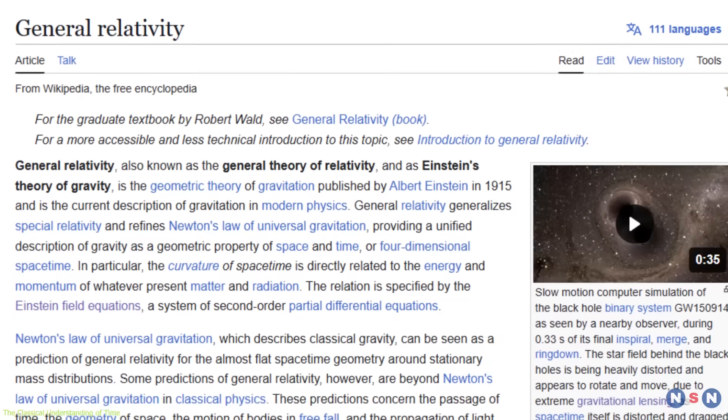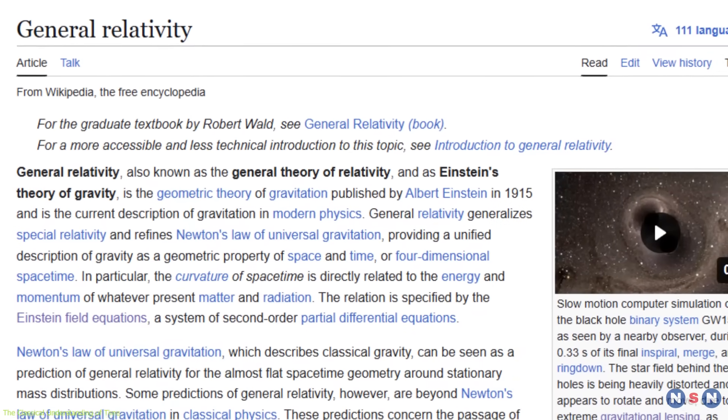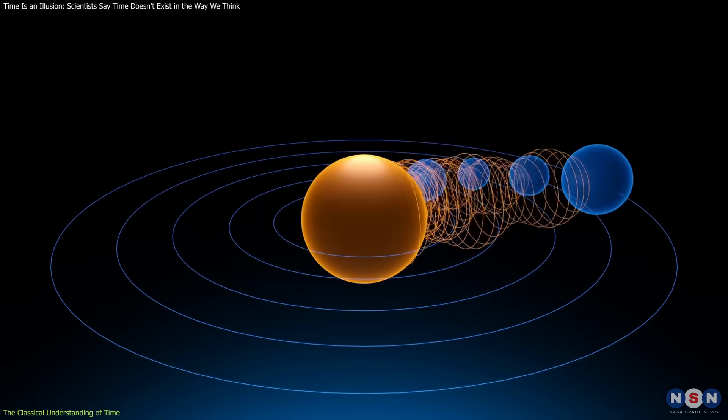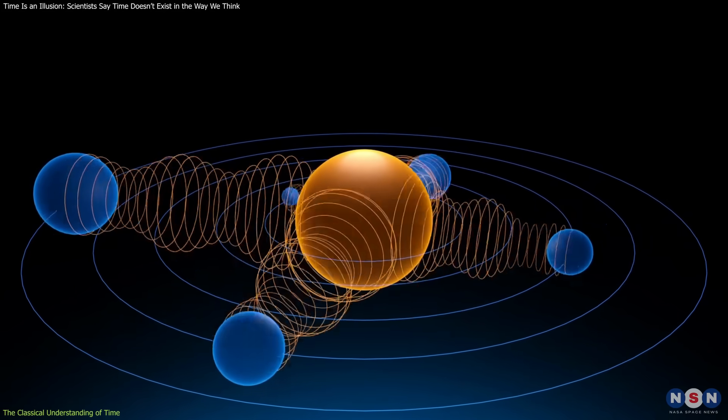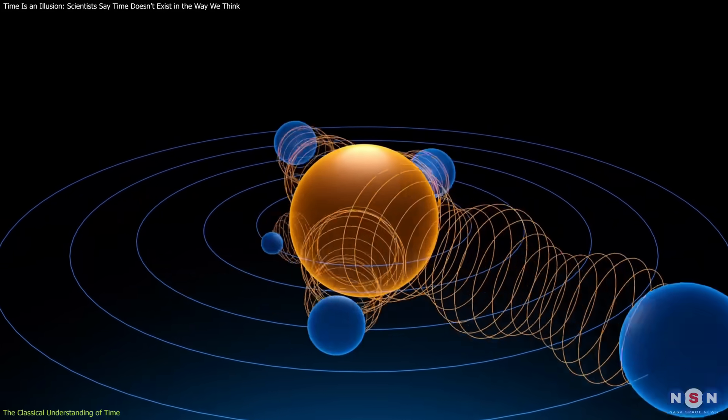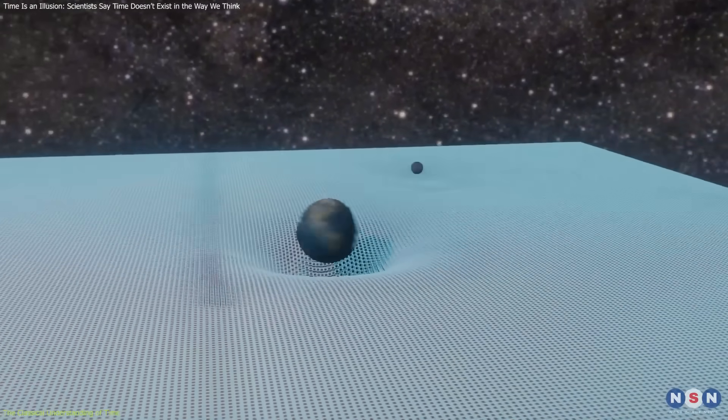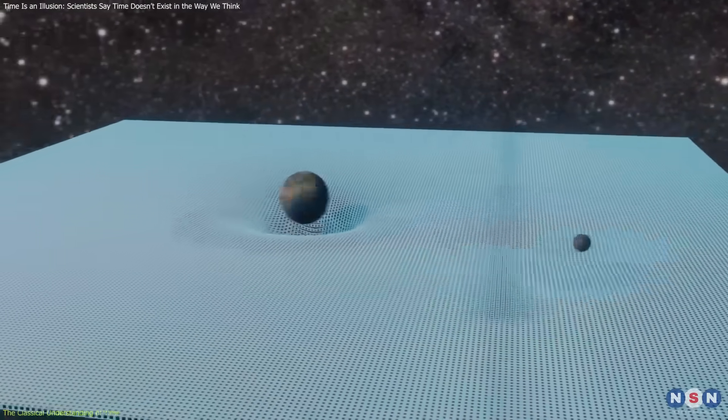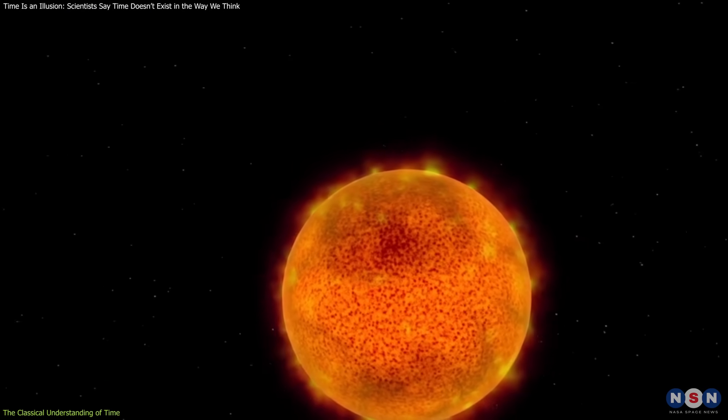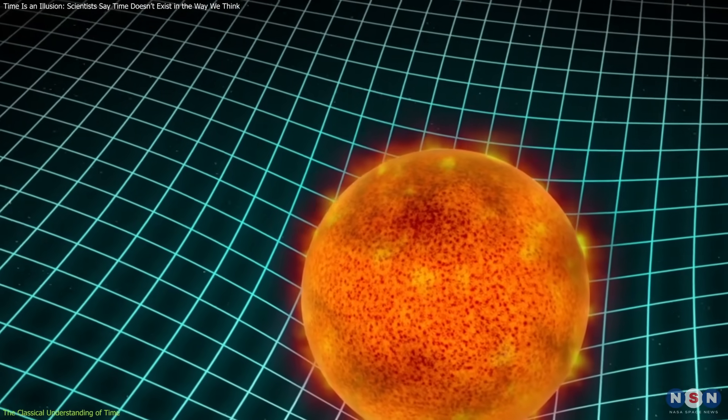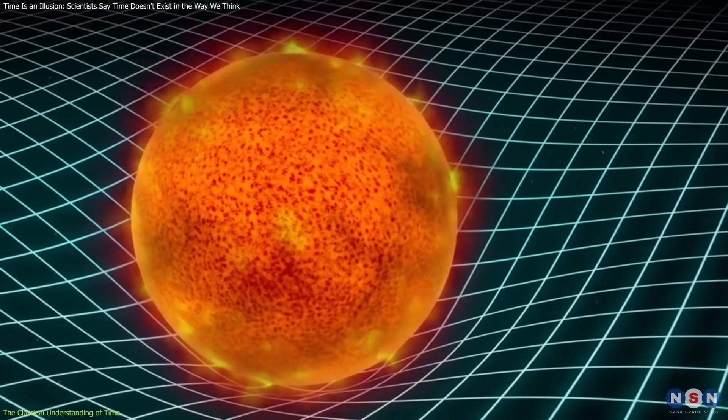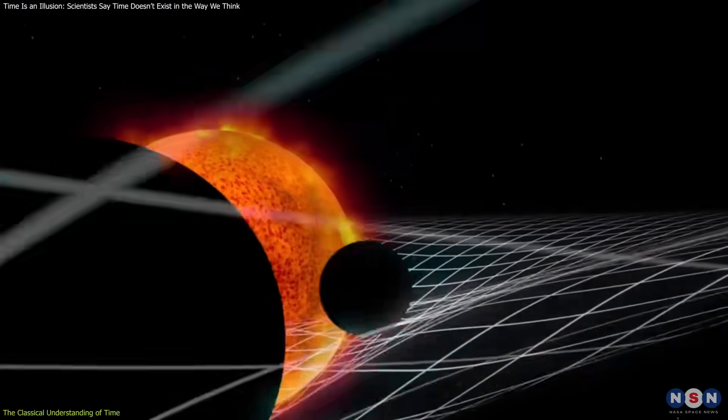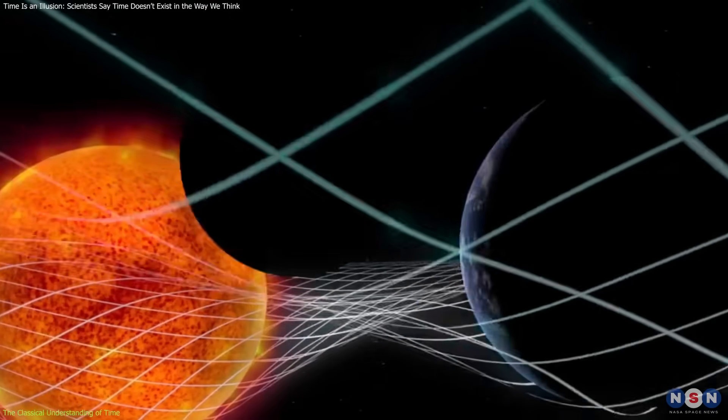Einstein's general theory of relativity further revolutionized our understanding by showing that gravity is not a force acting at a distance, as Newton had proposed, but a curvature of space-time caused by mass and energy. In this framework, massive objects like planets and stars warp the fabric of space-time, and this curvature dictates the motion of objects and the flow of time.